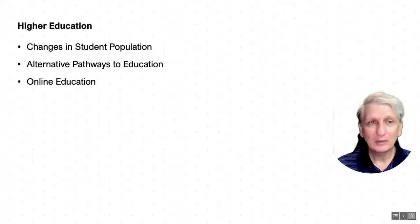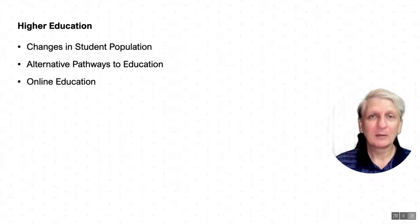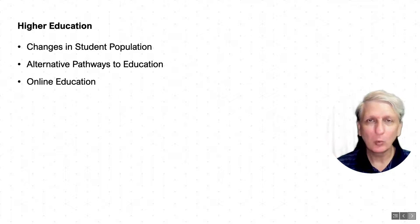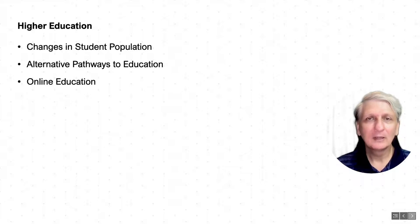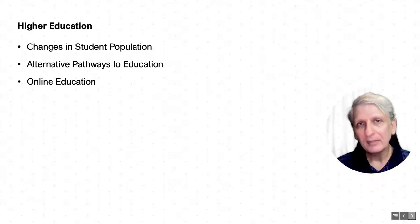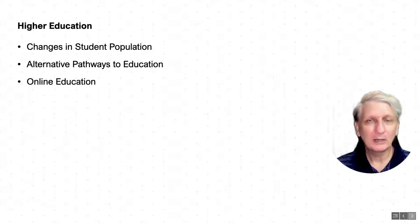Some issues facing higher education include changes in student population, where higher education is focusing much more on mature-age students returning from the workforce for re-education rather than school leavers. There are also many more alternative pathways into higher education — not just through high school scores, but through other courses, industry experience, and various other means. And the whole nature of online education has seen a huge proliferation during the pandemic, making it a big focus around how things can be done differently in higher education.